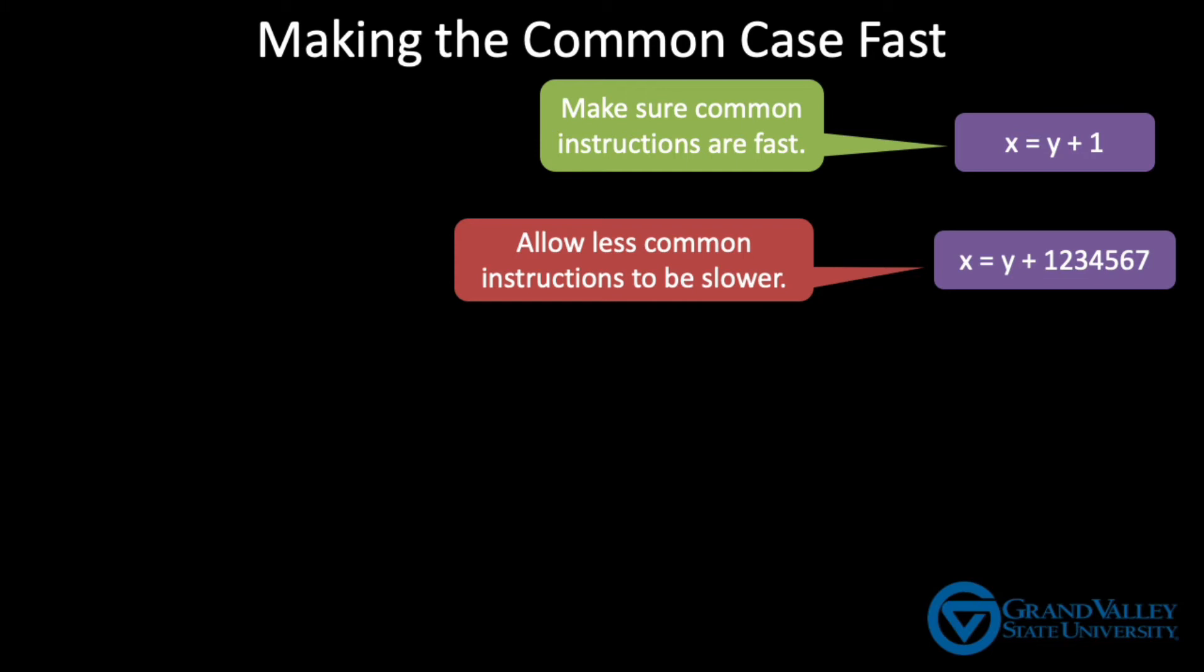The principle of making the common case fast says that we should focus on the speed of these common instructions even if it means that the less common instructions are slower. Think back to our first two proposals for handling large constants, either making all the instructions longer or allowing for a variable width instruction set. Both of these choices would make every instruction a little slower. Instead, the MIPS approach allows the common cases, like ADDIs with small constants, to complete as quickly as possible, but makes the uncommon cases take two or three entire CPU cycles. That means those ADDIs with large constants are considerably slower than the alternative for those specific instructions, but the situation is rare enough that it allows the CPU to run faster overall.